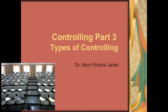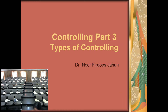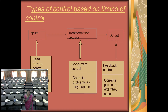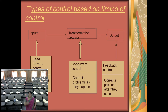Types of controlling — whenever you want to do controlling, there are three timings or three types of controlling. You can do controlling before, during, and afterwards. So based on timing of control, you may ask: should I control before I start the activity, during the activity, or after the activity? That is what I am covering today — types of control based on timing of control.